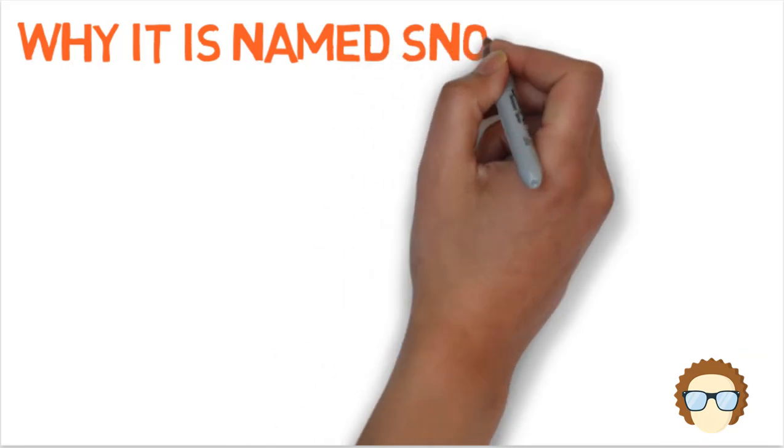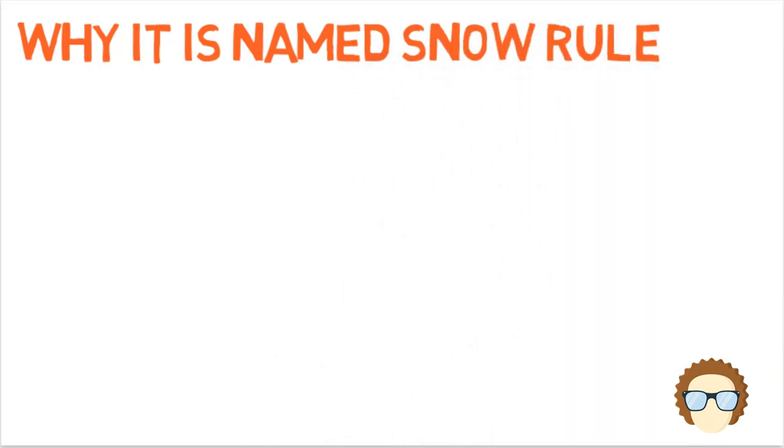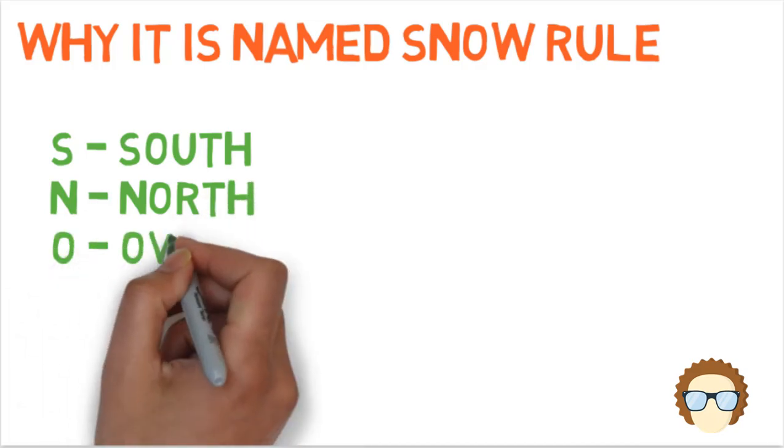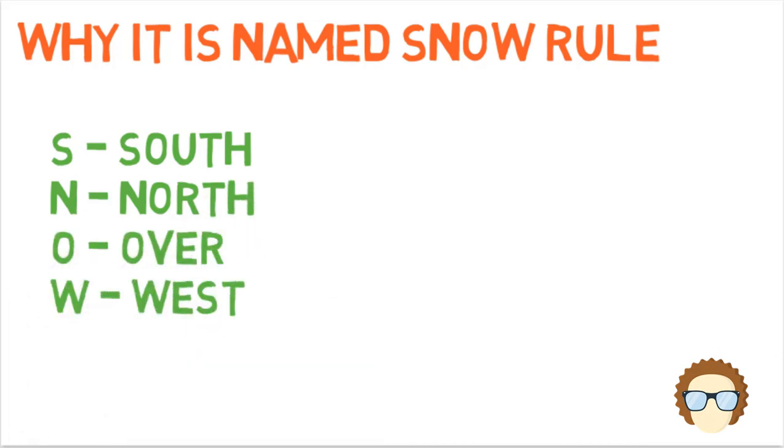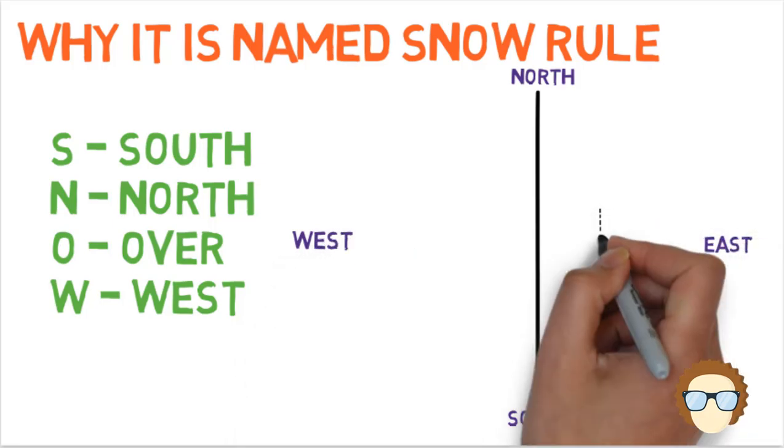And today we will first know why is snow rule named so. South North. If the wire electricity is flowing from south direction to north and if you keep the compass over the wire, then the compass will turn to west.